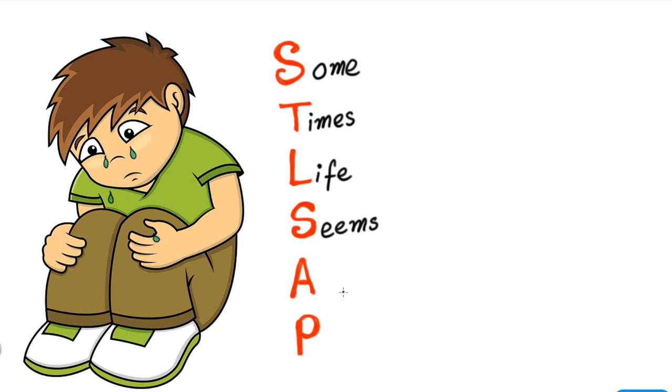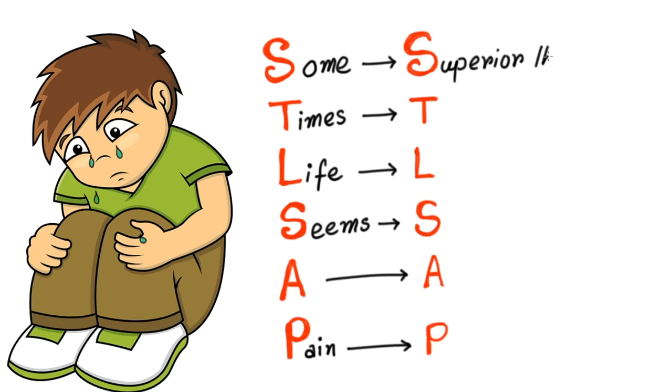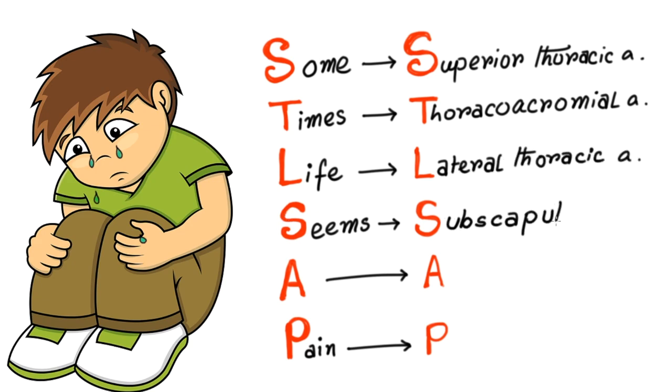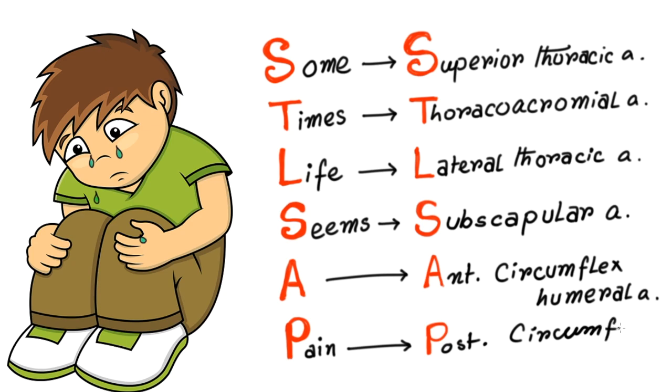Now here is the mnemonic for primary branches: sometimes life seems a pain. Now follow the red letters. S stands for superior thoracic artery, T for thoracoacromial artery, L for lateral thoracic artery, S for subscapular artery, A for anterior humeral circumflex artery, and P for posterior humeral circumflex artery.